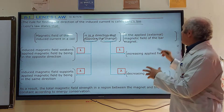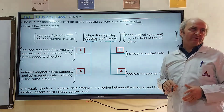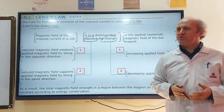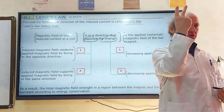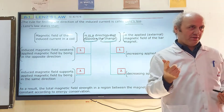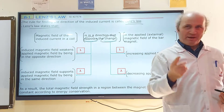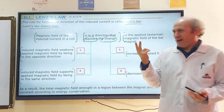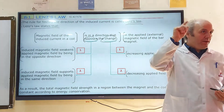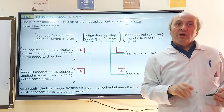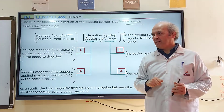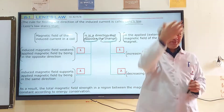Consider the applied magnetic field of the bar magnet. How can you oppose a change? Change can be two types: increase or decrease. If the change is an increase, how can you oppose it? By decreasing. If the change is a decrease, how can you oppose it? By increasing.